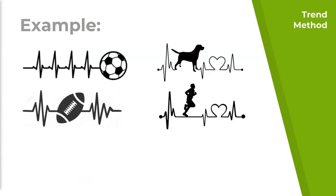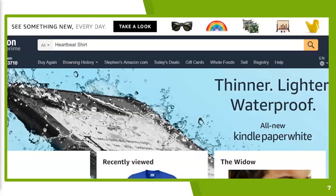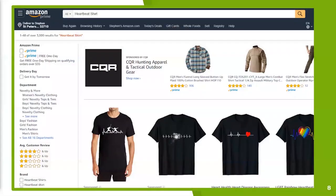Here's an example — you've hopefully seen this if you've done any print-on-demand research. We recognize the EKG heartbeat image as a trend and try to get its core. You can't search this image on Amazon, but you can relate it to keywords. Most people title this image as 'heartbeat.' We take 'heartbeat,' add 't-shirt,' search Amazon, and see over 3,000 results — plenty to justify niching down.